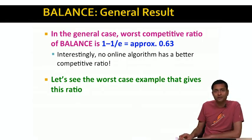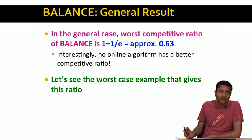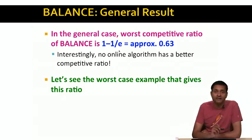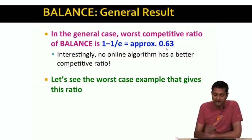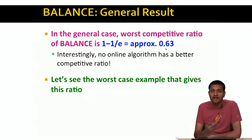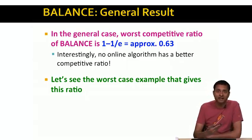But what happens if there are more than two advertisers — a large number of advertisers? In that case, it can be shown that the competitive ratio of balance is given by the expression 1 minus 1/e, where e is the base of the natural logarithms, approximately 2.718. That is approximately 0.63. Notice that this competitive ratio of 0.63 is strictly better than one half, which is the competitive ratio of the greedy algorithm.